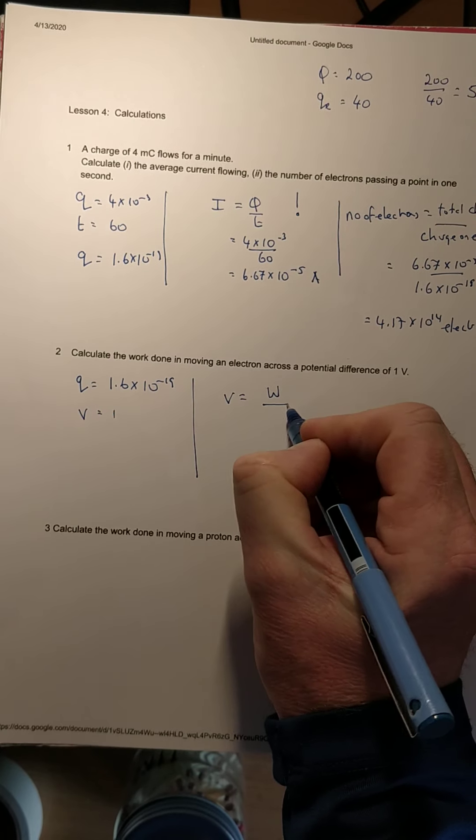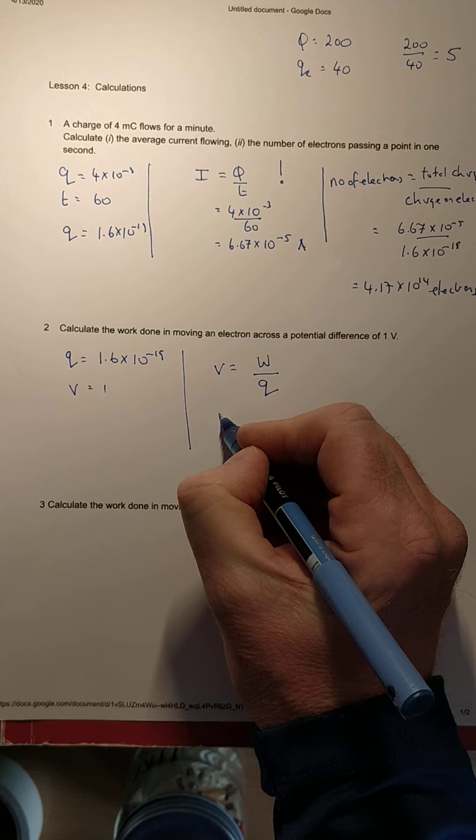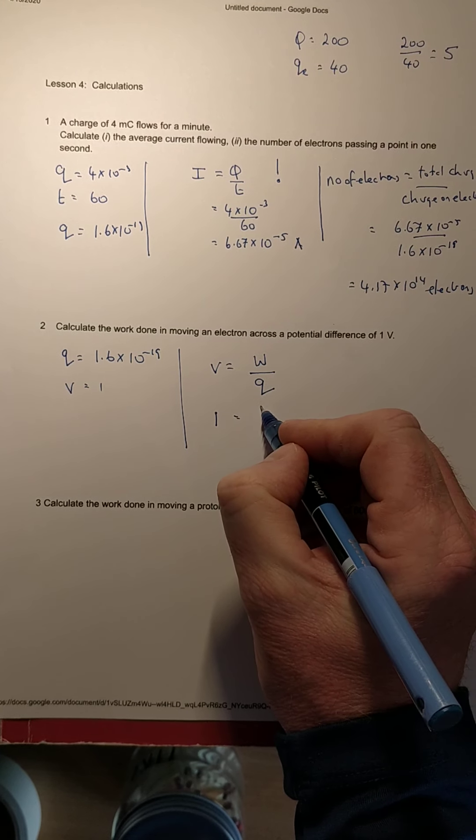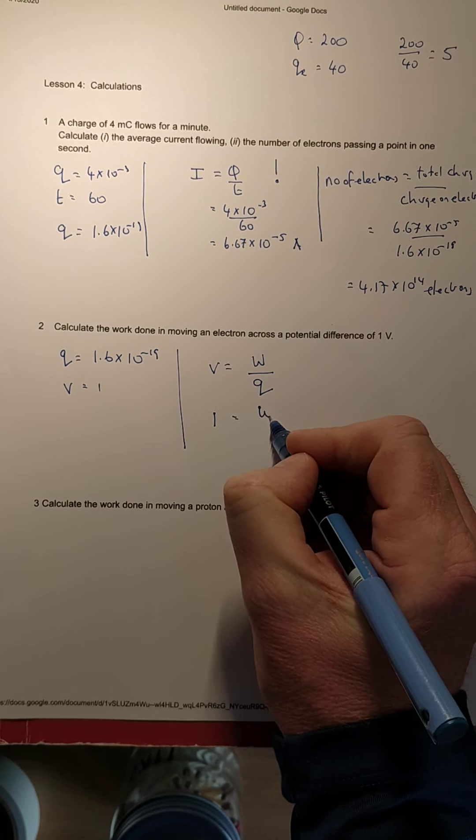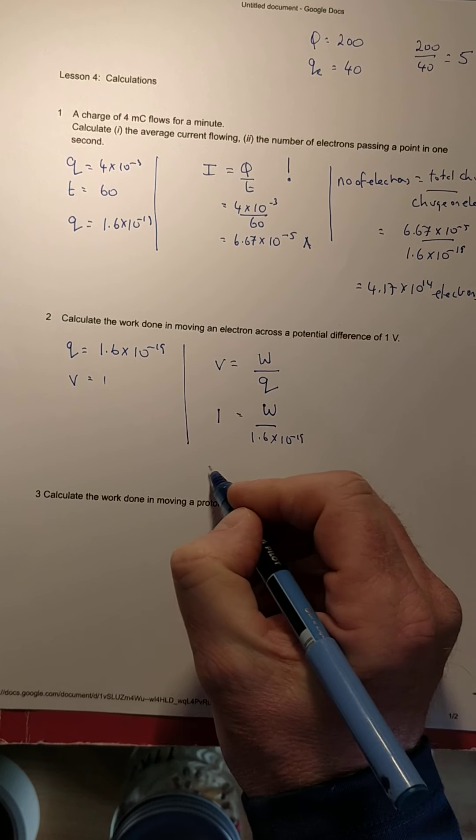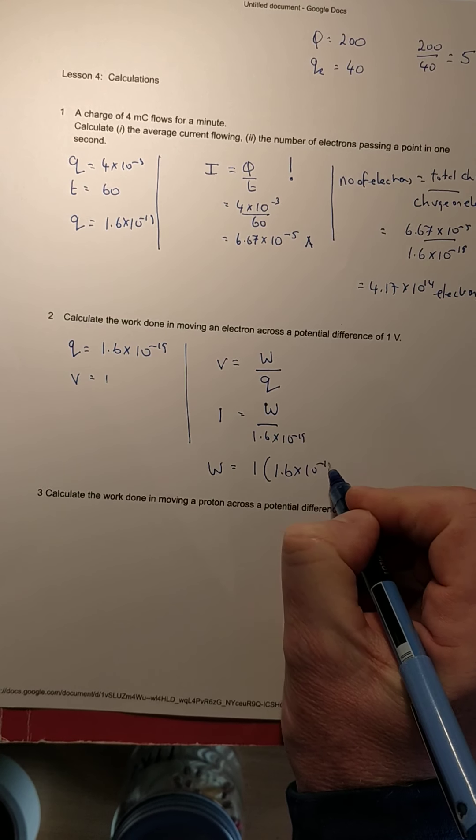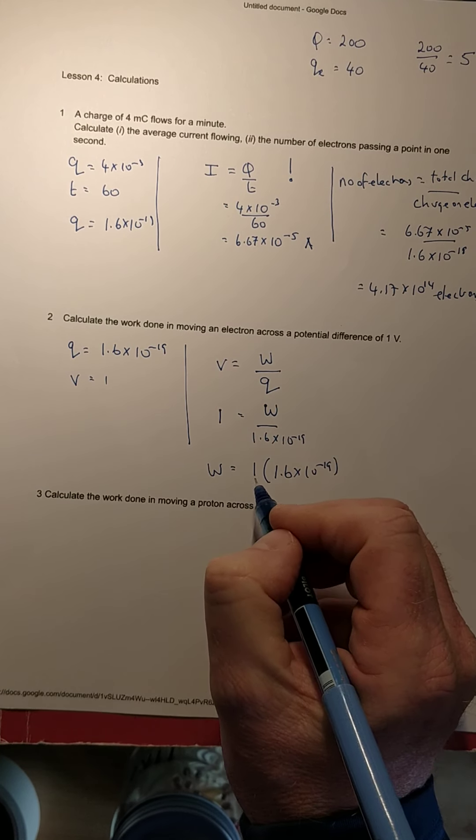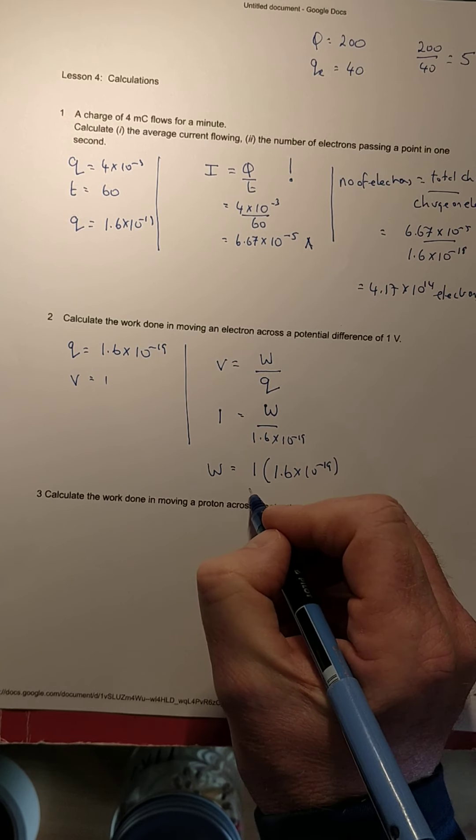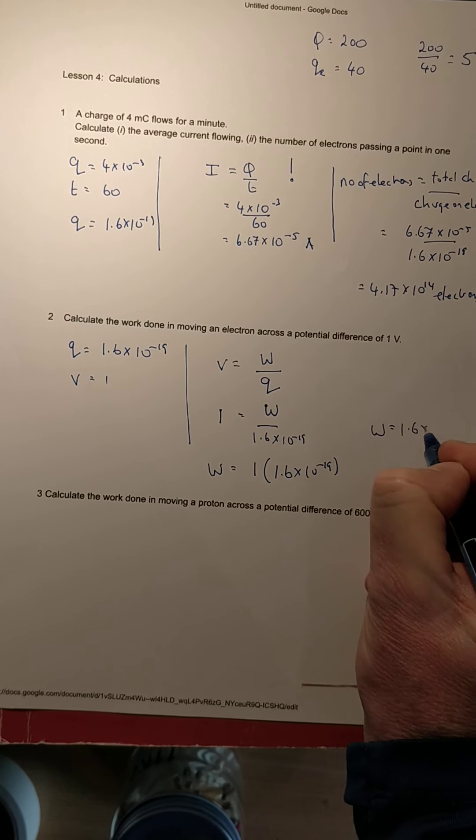The definition: voltage is work done per unit charge. In this case the voltage is 1, the work done is what we're looking for, and the charge is 1.6 × 10⁻¹⁹. So the work done, I'm going to do it kind of full here, it's 1 × 1.6 × 10⁻¹⁹.